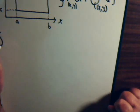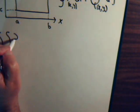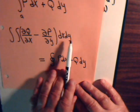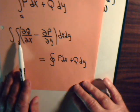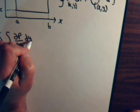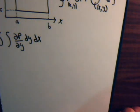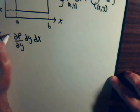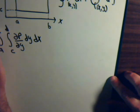We have the double integral of the partial of P with respect to Y. This is just a generic setup with no specific limits. We can write it as dy dx where Y goes from C to D and X goes from A to B.